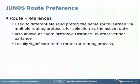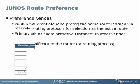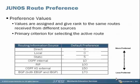Route preferences are used to differentiate the same route or prefix number learned via multiple routing protocols for selection as the active route. You might also recognize this as administrative distance in other vendors. Route preferences only have local significance to the router for selecting the active route. Preference values are automatically assigned by the routing process and it's the primary criteria by which a router installs the active route when the same route is learned via multiple routing protocols.